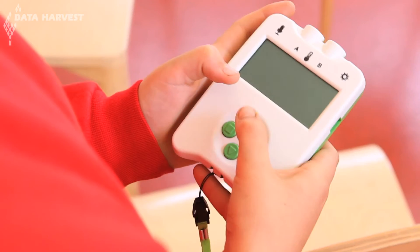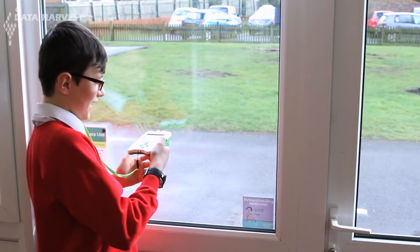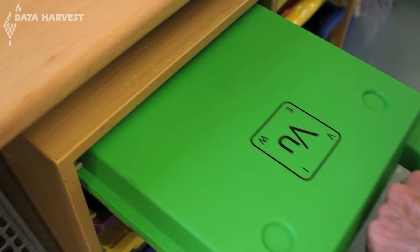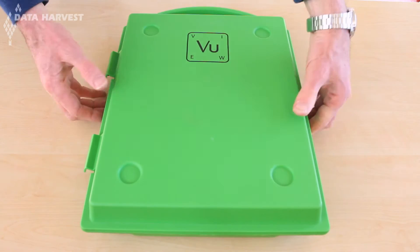Collecting data couldn't be easier than when using the EasySense View data logger. It comes ready to go, straight out of the Gratnell smart case.